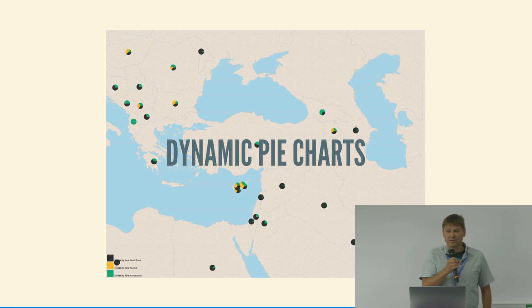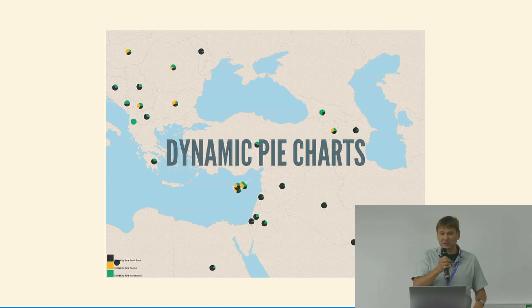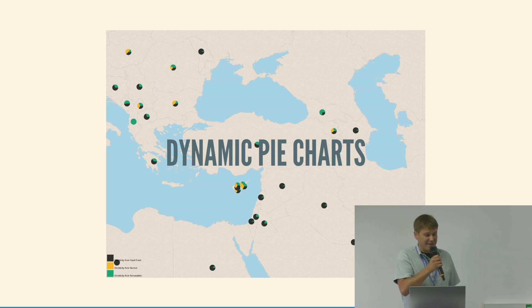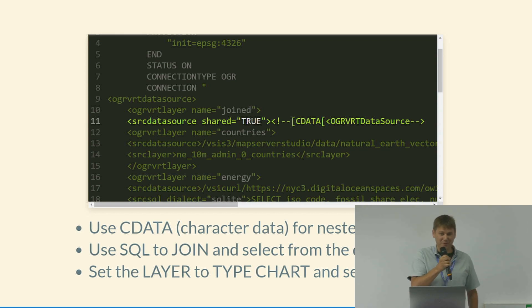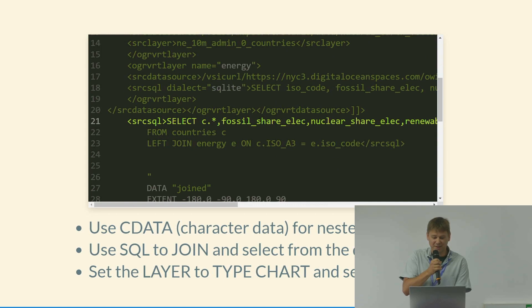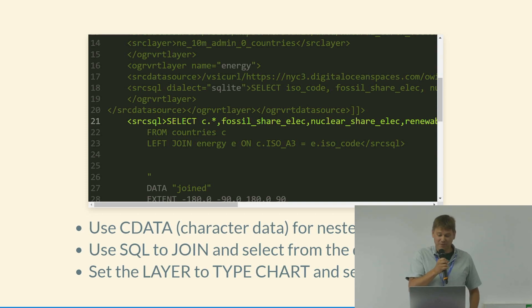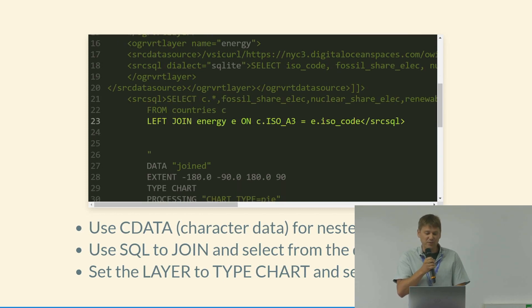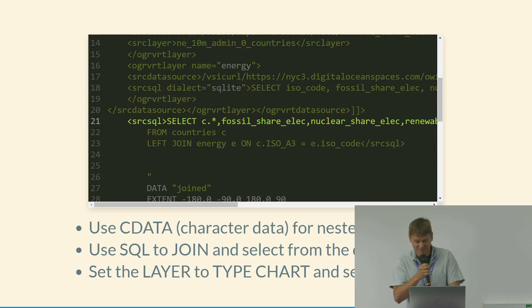This example shows dynamic pie charts — a feature that's been around since about 2015. It allows you to create charts spatially, where each point is a spatial location, and you can read in data to create pie charts. In this case it's showing energy usage broken down by category. It relies heavily on GDAL — there's a GDAL XML block in your connection and data strings. In this example it's taking a countries layer and a CSV file hosted on GitHub, and dynamically joining them based on country code, all done on the fly. Then MapServer renders the pie charts.